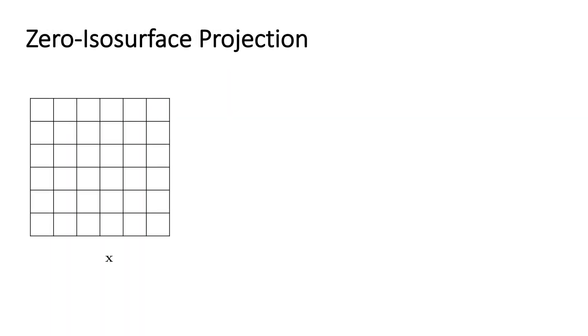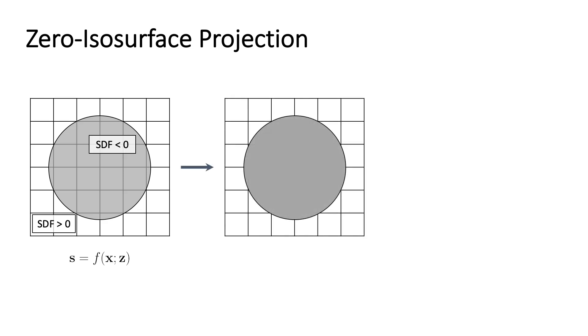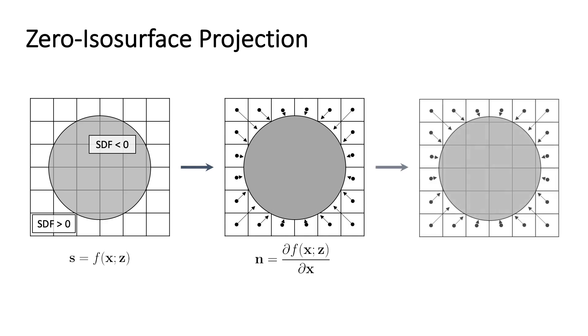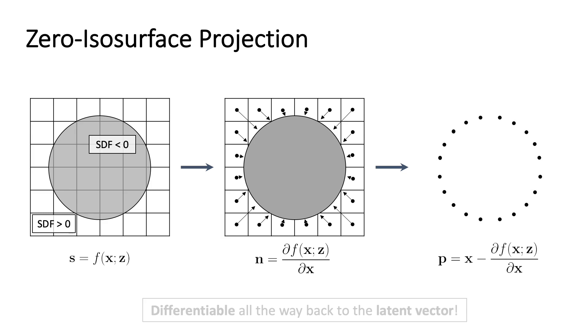The zero isosurface projection starts with an SDF grid. We utilize the fact that normals can be computed analytically as a derivative of the SDF with respect to the input grid points. As normals outline the direction to the closest surface and signed distance values provide the exact distance, we can project the query grid points onto the surface of the object.